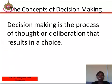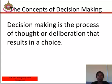Decision making is a process of thought or deliberation that results in a choice. This definition implies that decision making involves making a choice from possible alternative resources. In farm business, decision making is one of the most important activities that a farm manager has to carry out. It is important that a farm manager follows a gradual and sequential process in taking decisions.